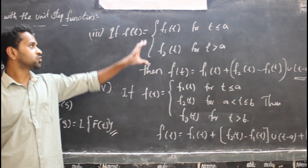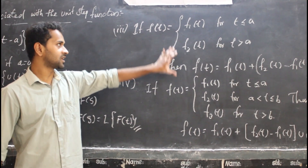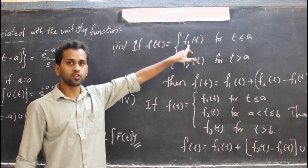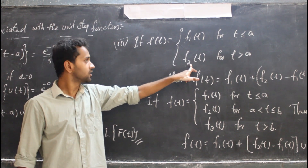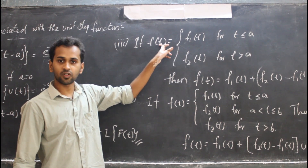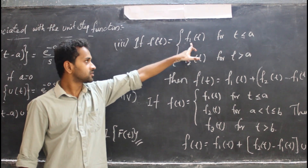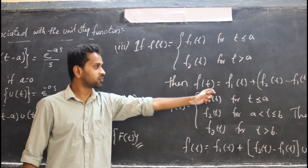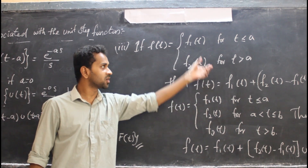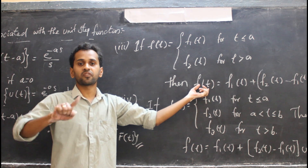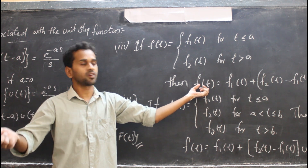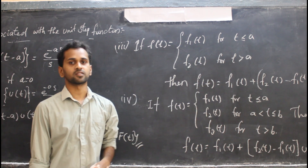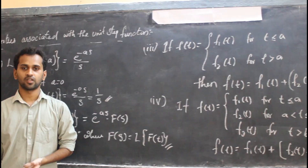When we get problems like f(t) = 2t or 2t², or f(t) = cos(t), sin(t), we represent the function using this property formula. First, represent f(t) using the property, then apply the Laplace transform to get the required result.